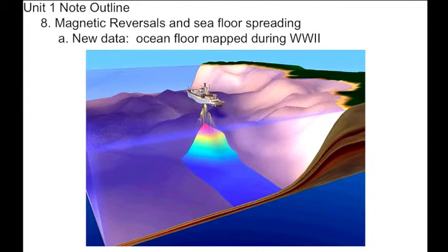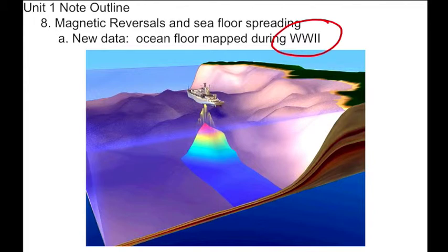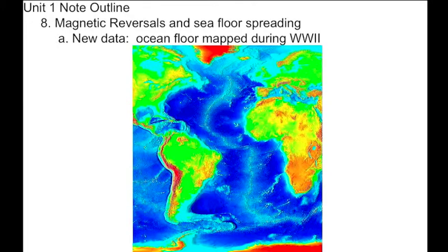More modern ways of measuring include multi-beam sonar, so you can get a nice three-dimensional image of the ocean floor. The scientific community began mapping the ocean floor, but it wasn't really until World War II that we began compiling and gathering tremendous amounts of data about the ocean floor for obvious security and military purposes. As a result, the scientific community could then utilize those maps.